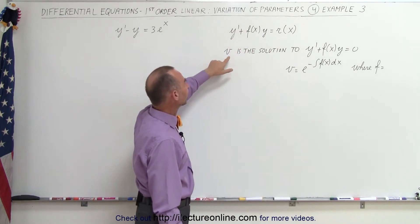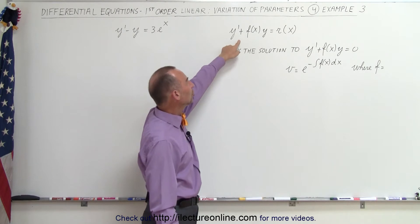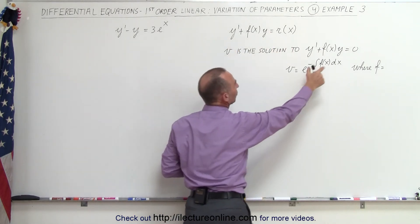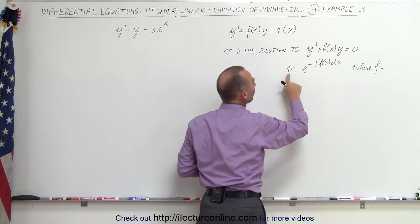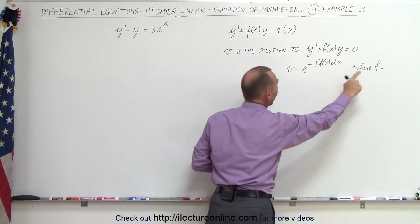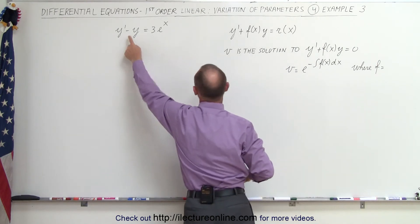And let's say that v is the solution to the homogeneous part of the equation, which is this part right here, letting r equals 0. So this is the equation that's non-homogeneous and v can then be written as e to the minus integral of f of x dx, where f in this case is equal to minus 1.